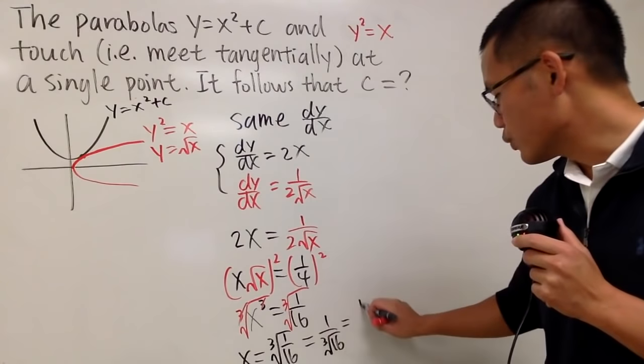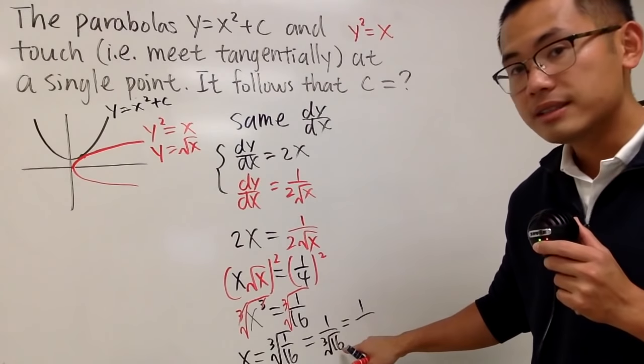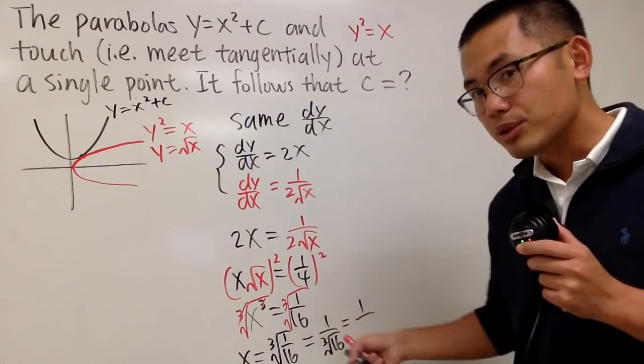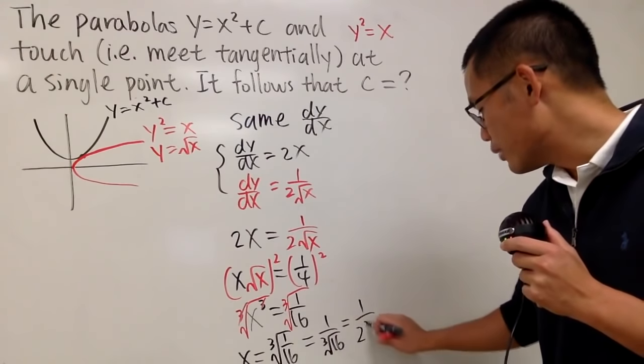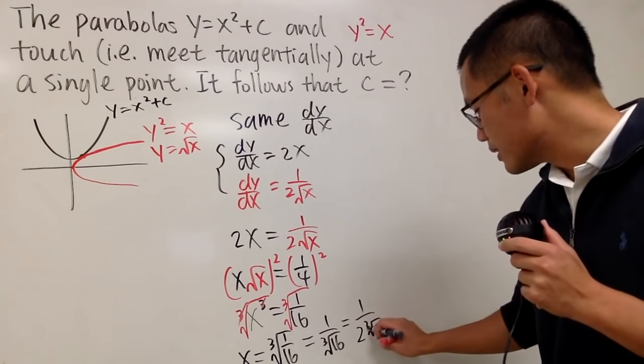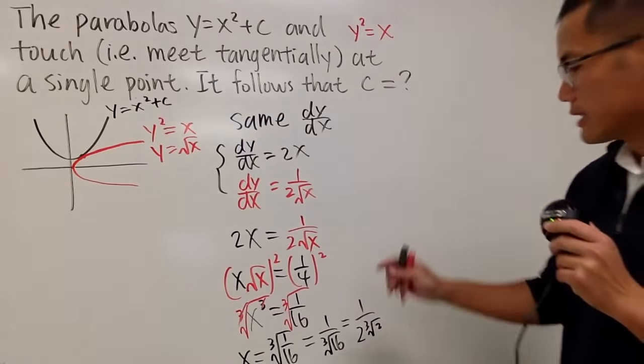And another version is 1 over, bring this down as 8 times 2. The cube root of 8 is 2, and then you have the cube root of 2, like this. So, that's pretty much the idea.